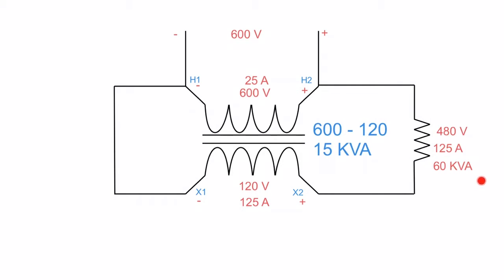We've got a 60 kVA load. The next step is to determine the line current. Knowing that power in equals power out, if the load is asking for 60 kVA, the source must supply 60 kVA. With a line voltage of 600 volts, 60,000 divided by 600 volts gives a line current of 100 amps.